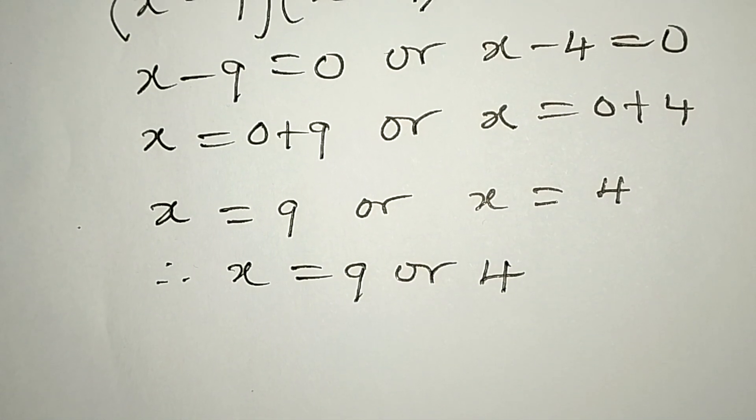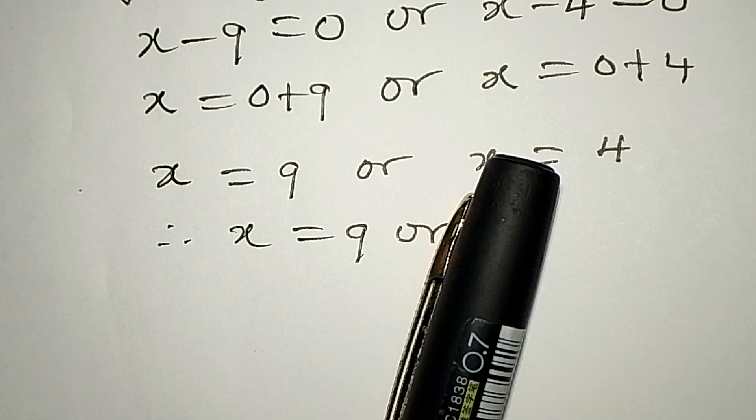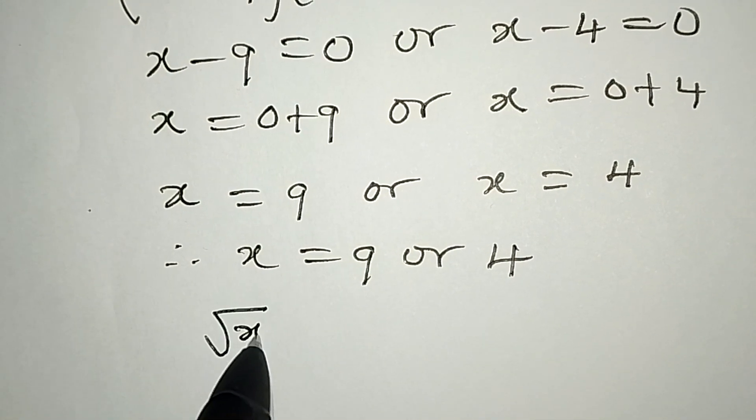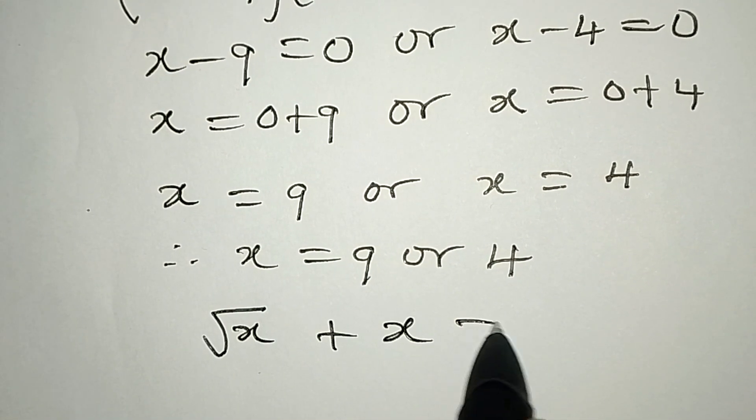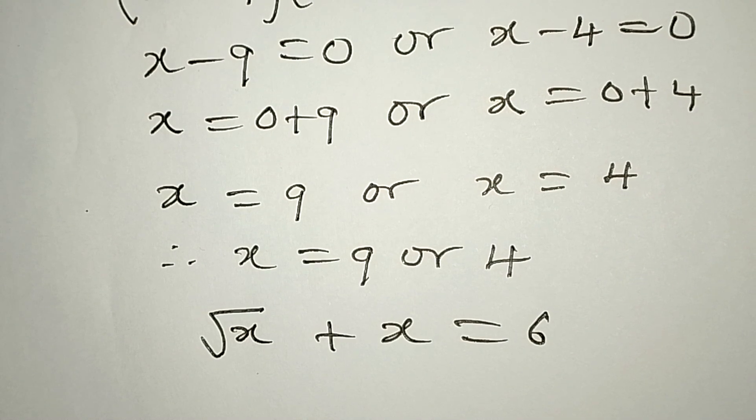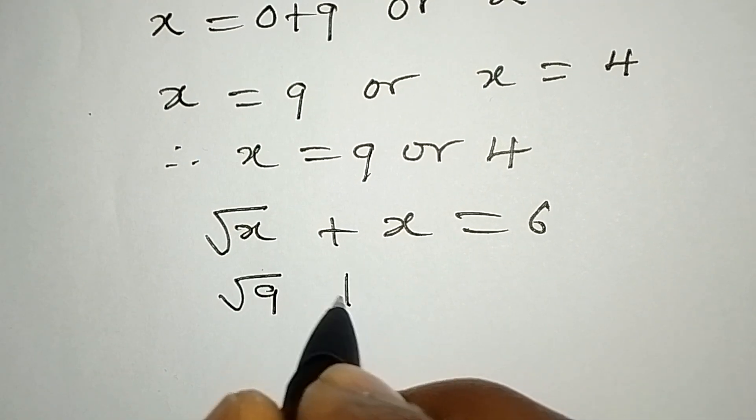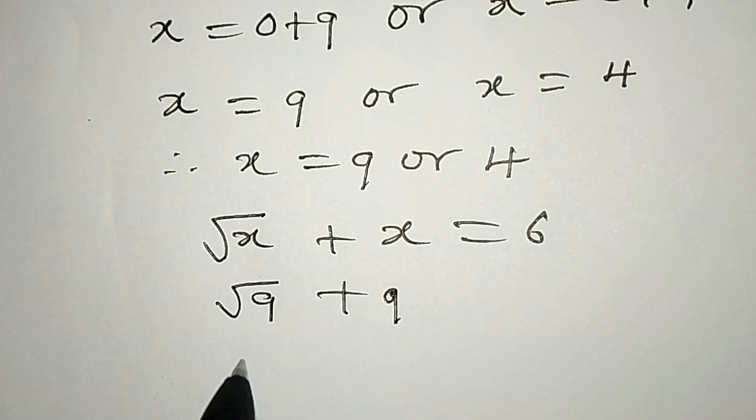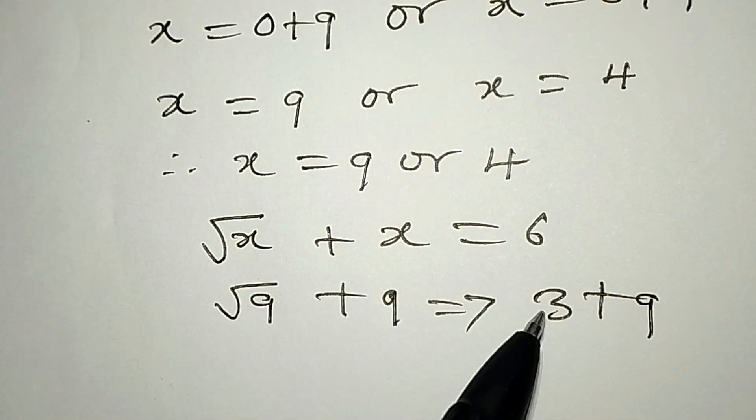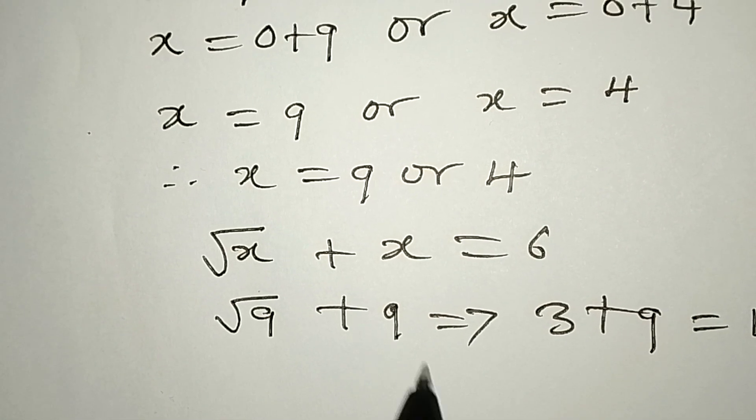Now let's test the two values and see if they will satisfy the equation. The equation is √x + x = 6. If we put 9 there, it's already more than 6, right? So it's not working because we have √9 + 9, which is 3 + 9 = 12. This is to say that x = 9 does not satisfy.